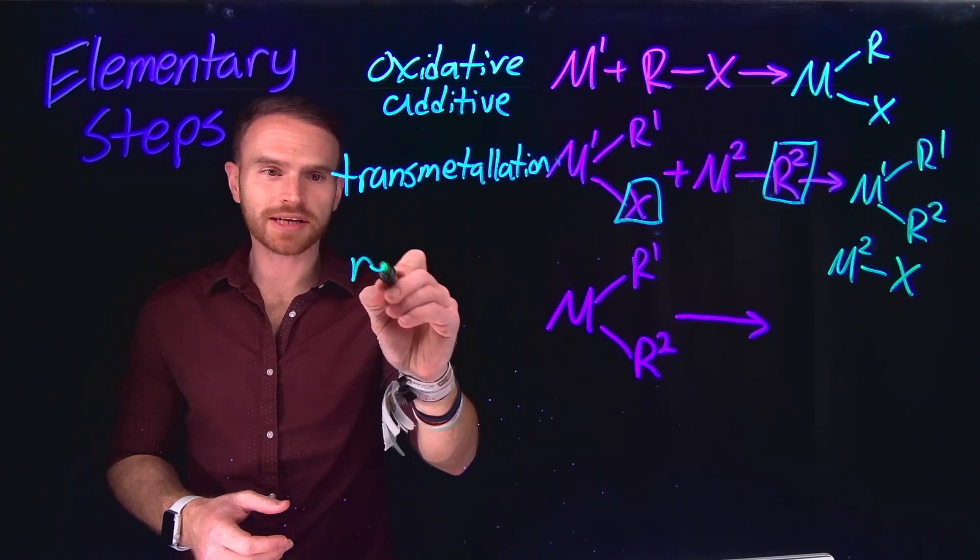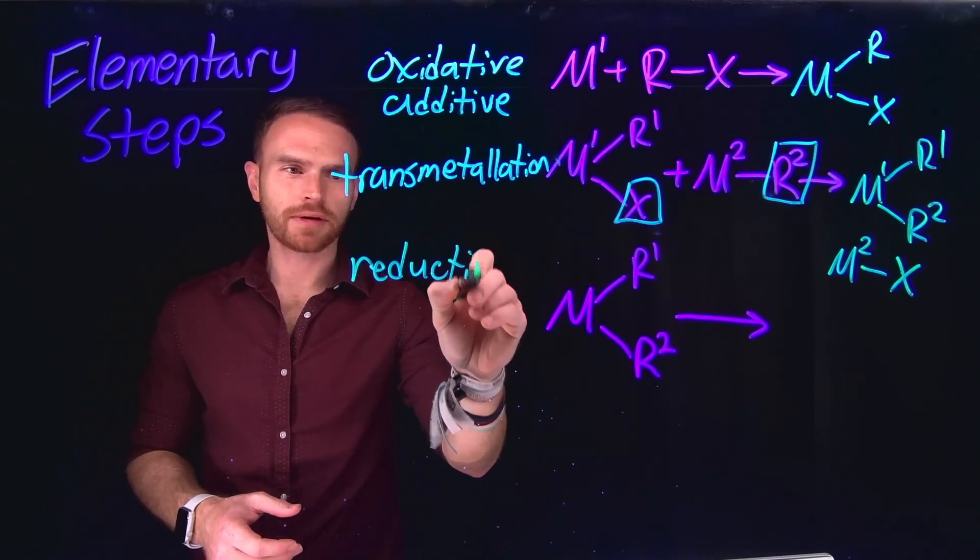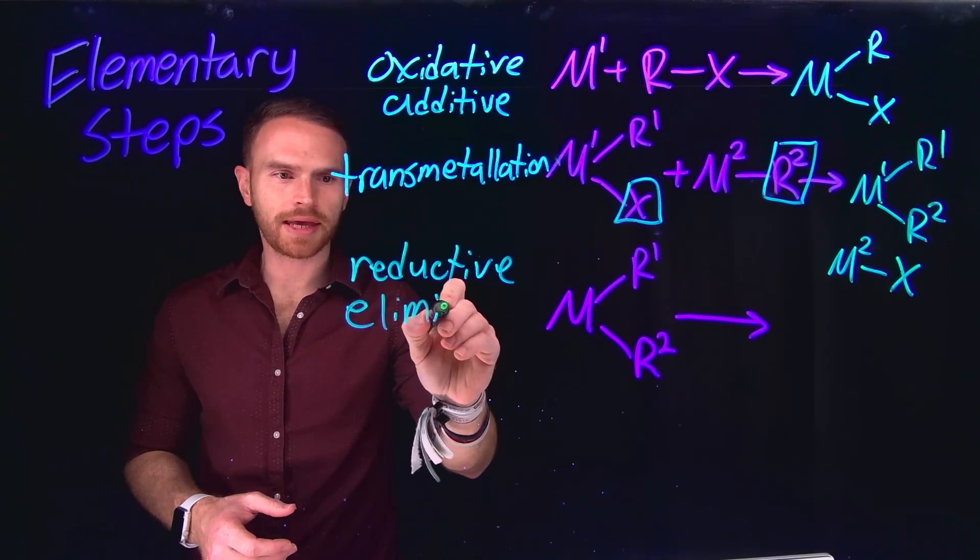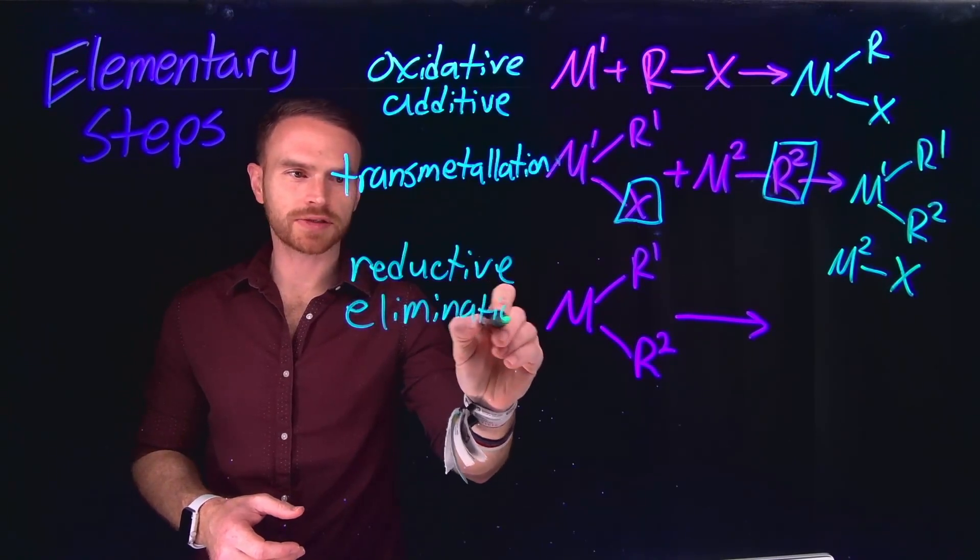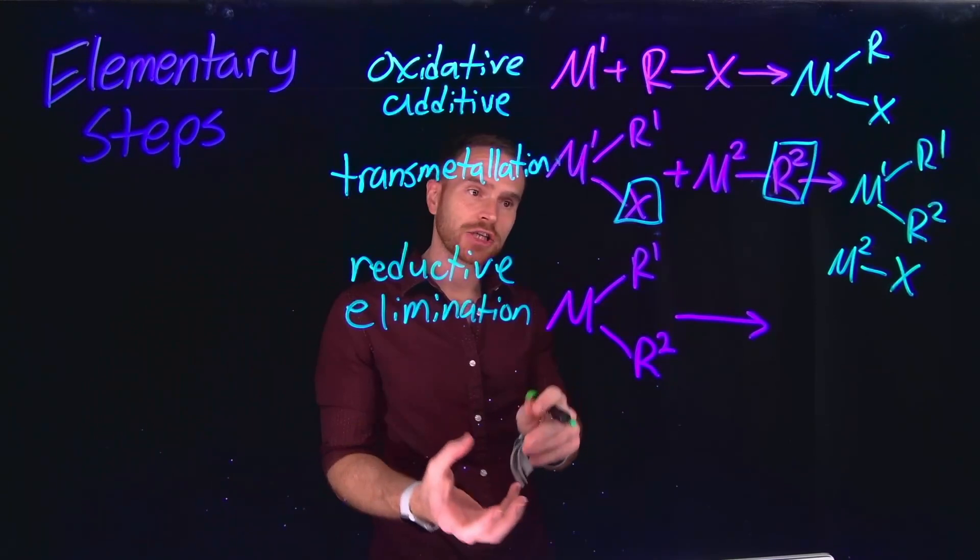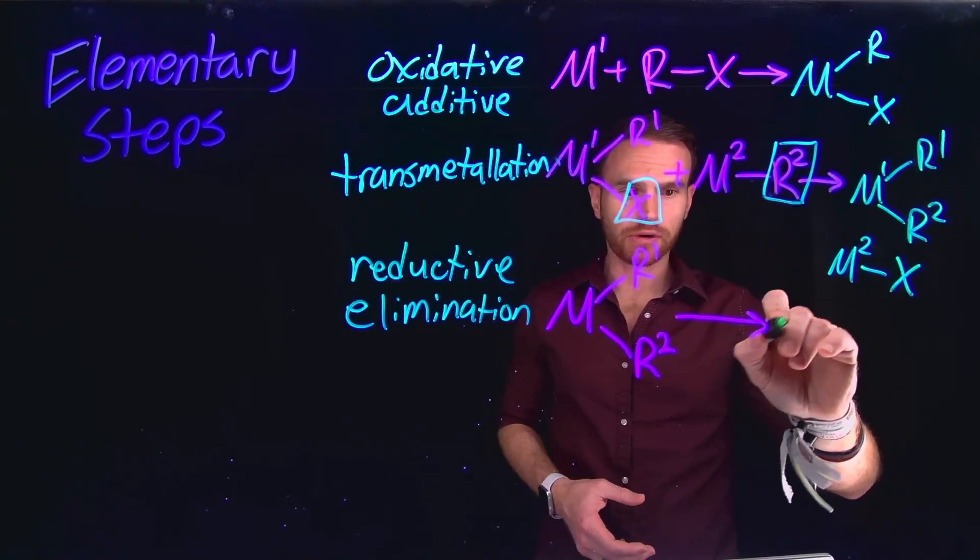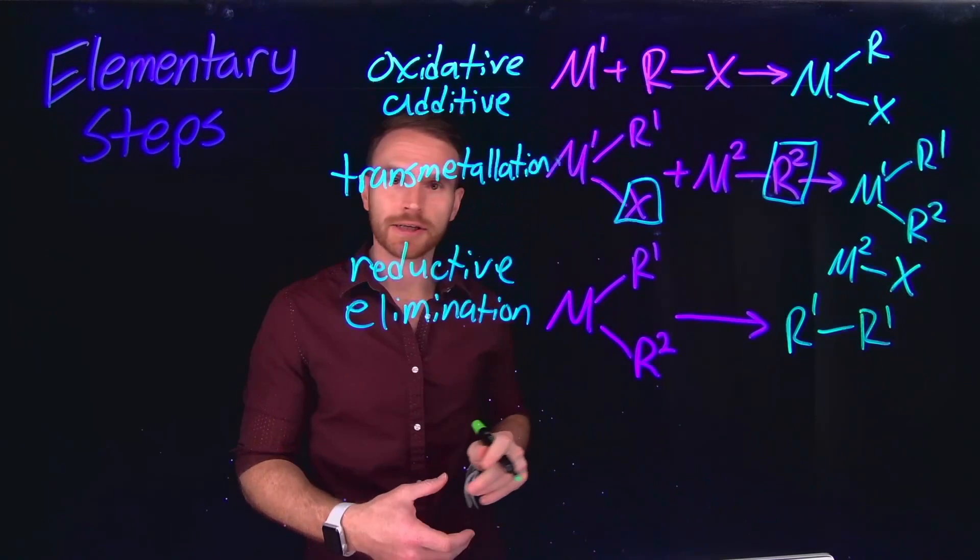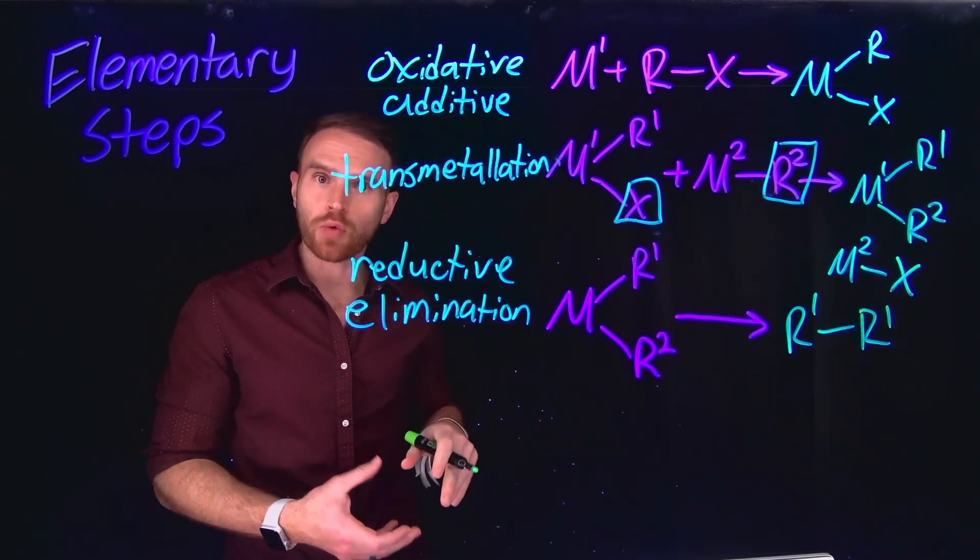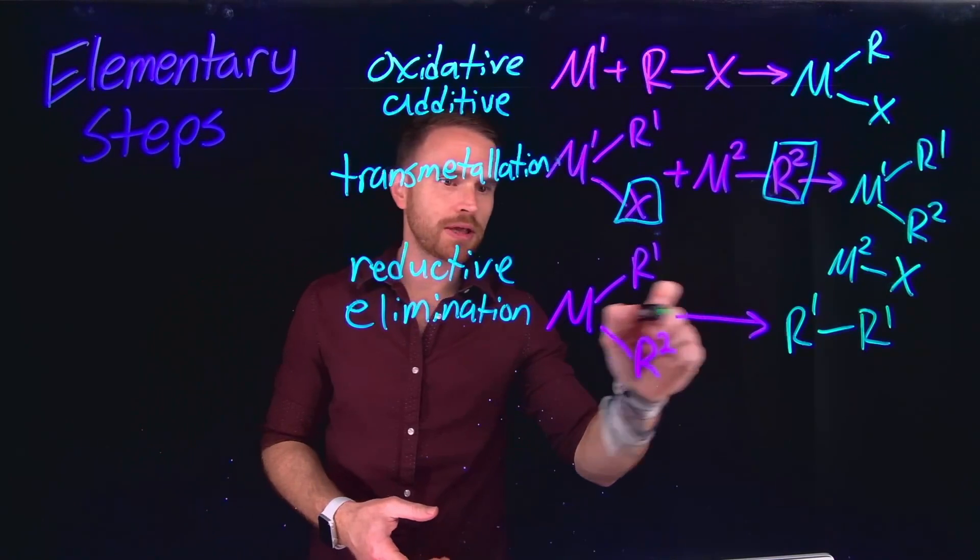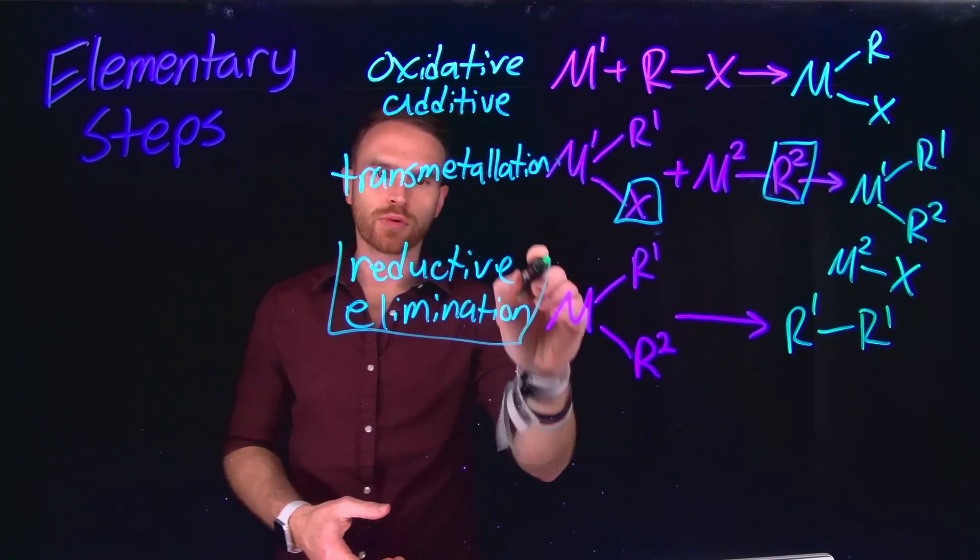Finally, reductive elimination is oftentimes the product forming step in cross coupling reactions, where two of those ligands that are attached to a metal can actually leave the metal center and generate a brand new covalent bond. In the case of today's video, we're largely going to focus on the formation of carbon-carbon bonds. So this will be the product forming step called reductive elimination.